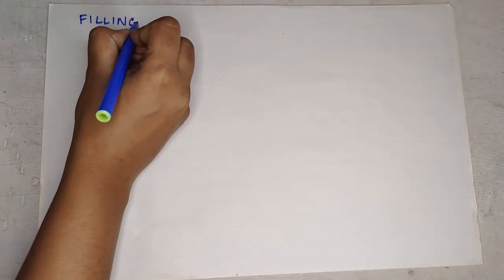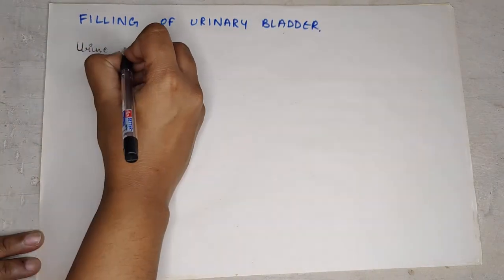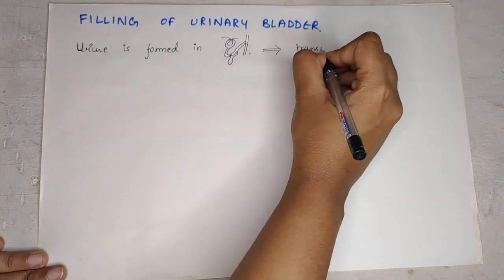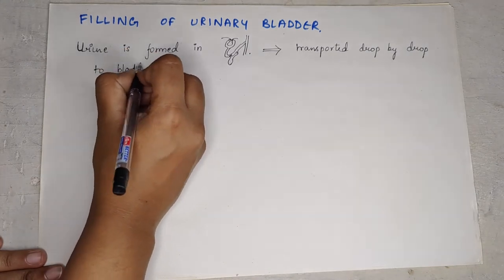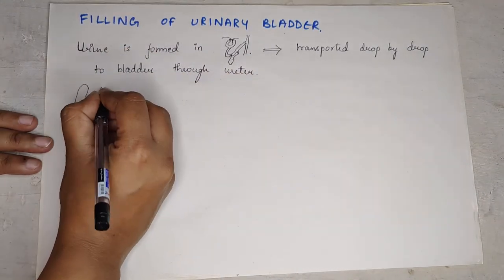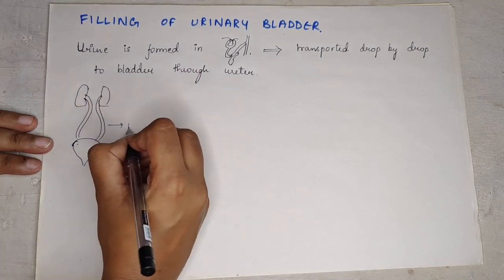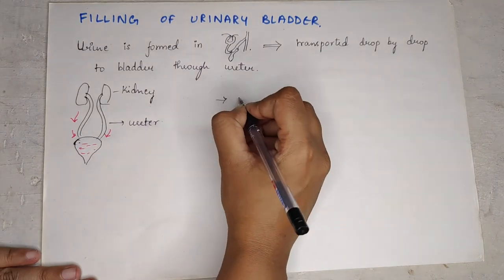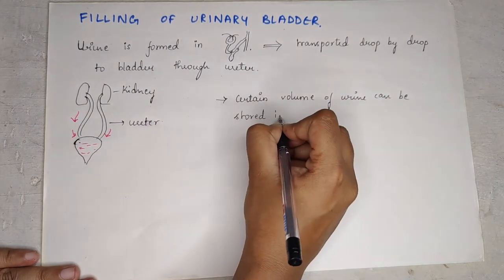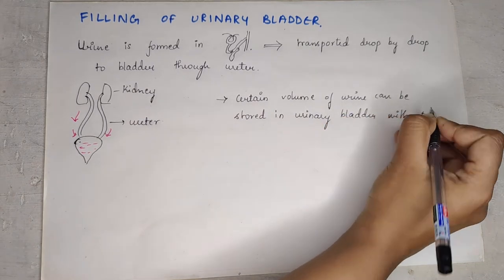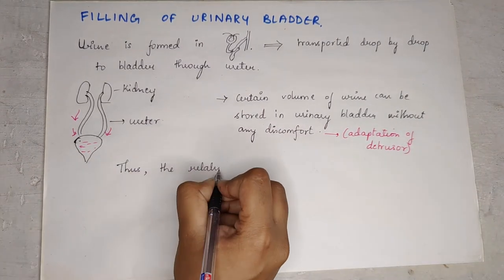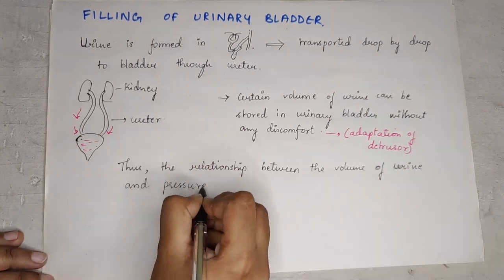We need to understand how the urinary bladder fills. Urine is formed in the nephrons in the kidneys and is transported drop by drop through the ureter to the bladder. A certain volume of urine can be stored in the urinary bladder without any discomfort — this is called adaptation of the detrusor. The relationship between volume of urine and pressure in the bladder is studied by a cystogram.